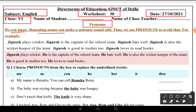Do you know repeating nouns can make a sentence sound odd? Thus we use pronouns to avoid that. If we repeat a certain noun in a sentence, it will sound very weird. But if we use pronouns instead, it will sound beautiful and good. Here we have an example.